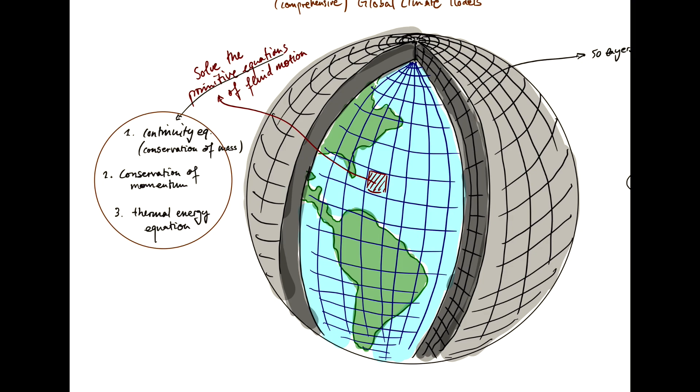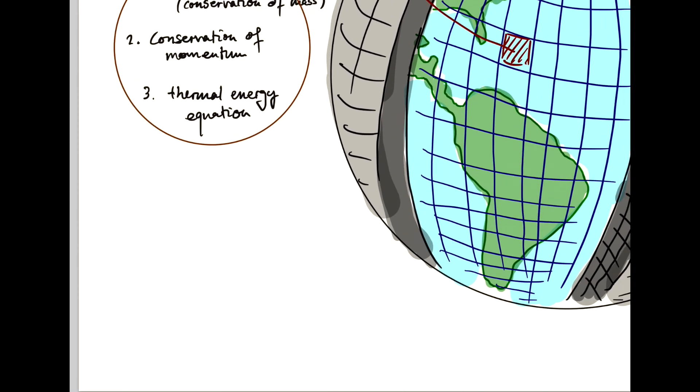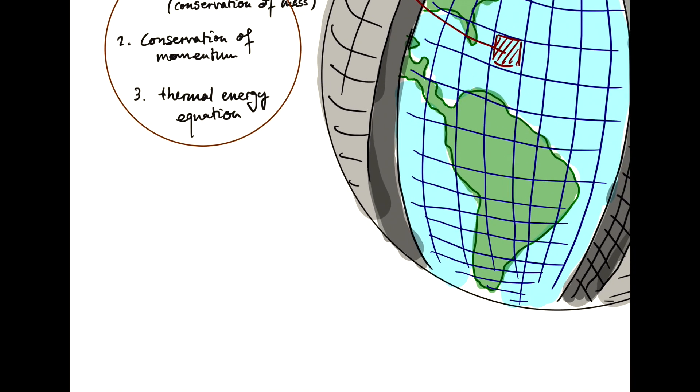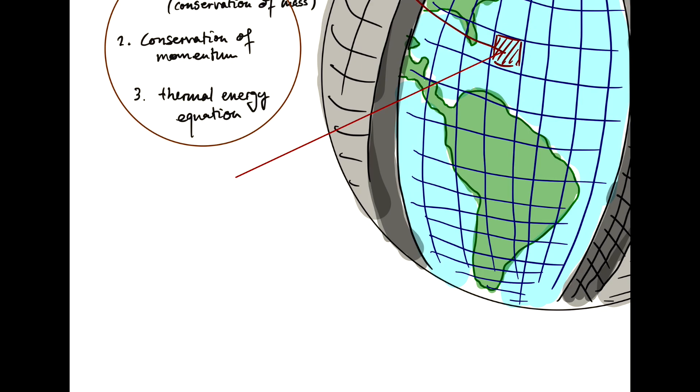But, of course, the climate system is way more complex than just that. And so, there's a whole number of physical processes that we have to represent, essentially, at every grid box. So, graphically, rather than talking about these equations, you have all these physical processes. So, let's consider sort of a cross-section here.